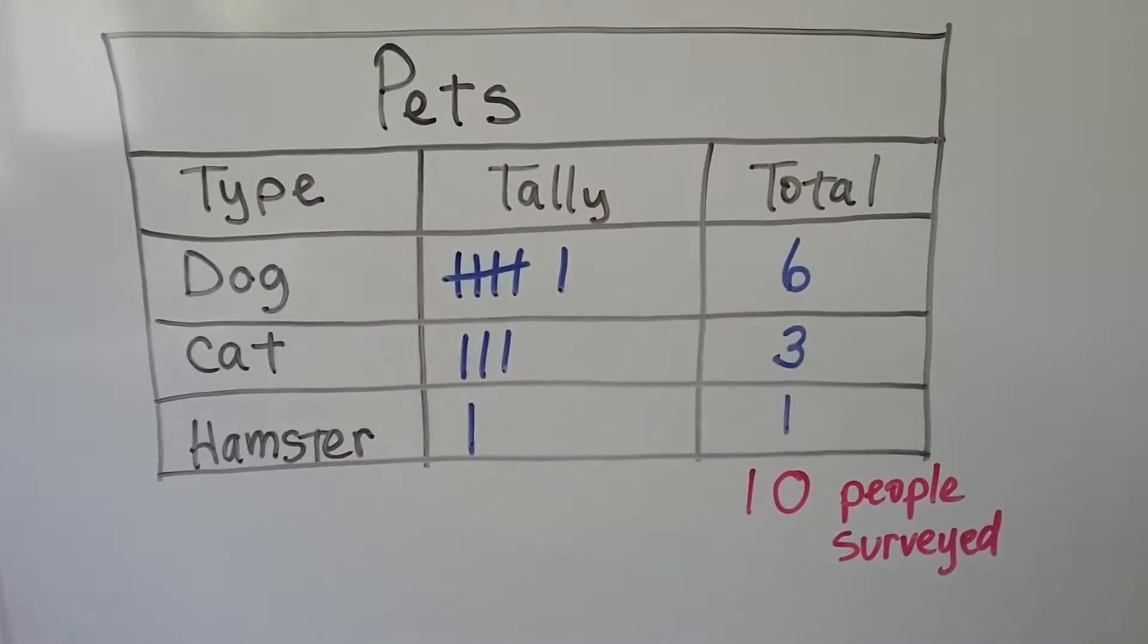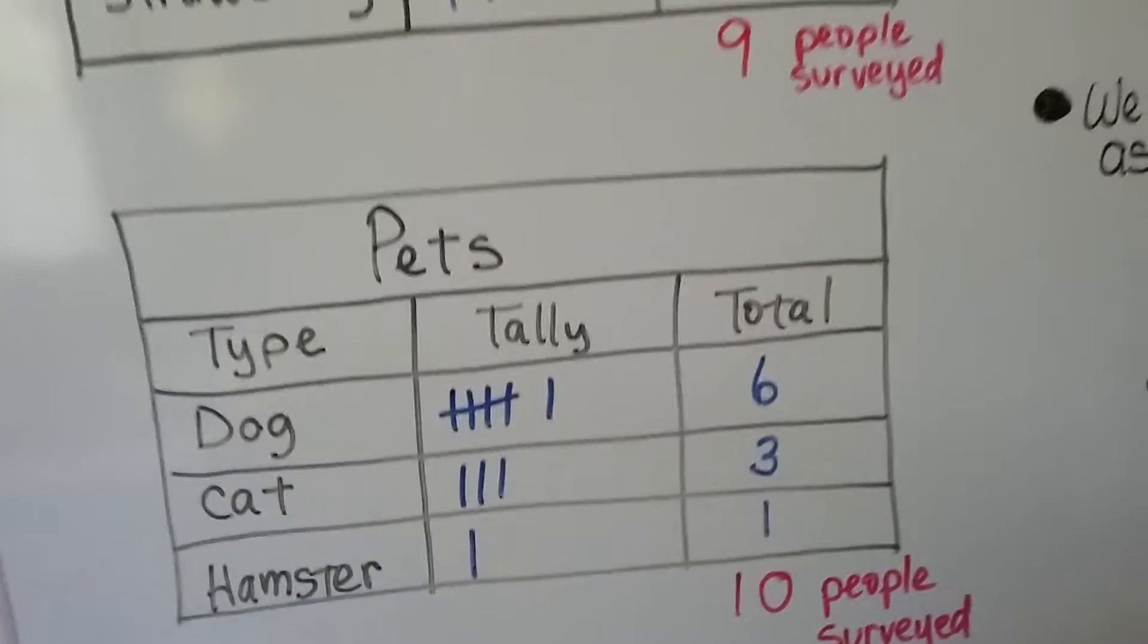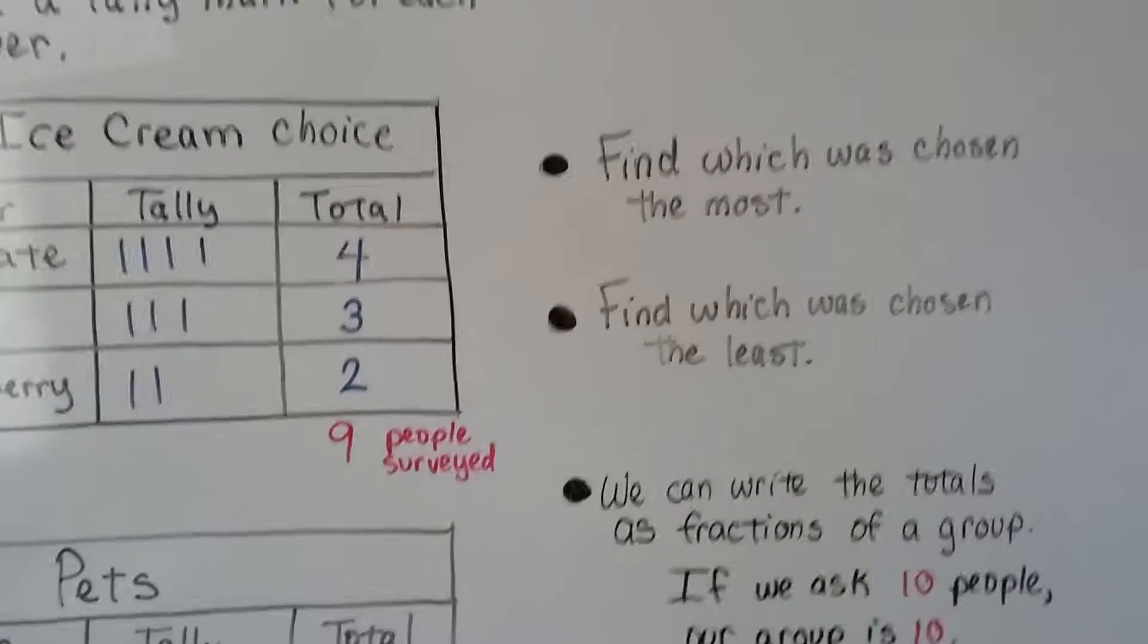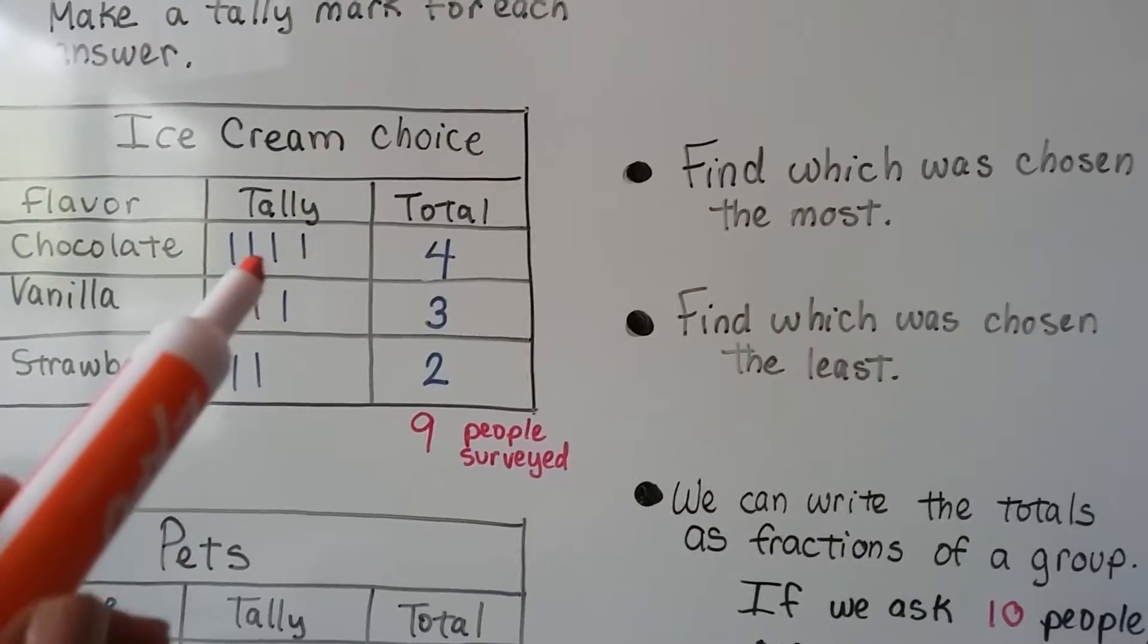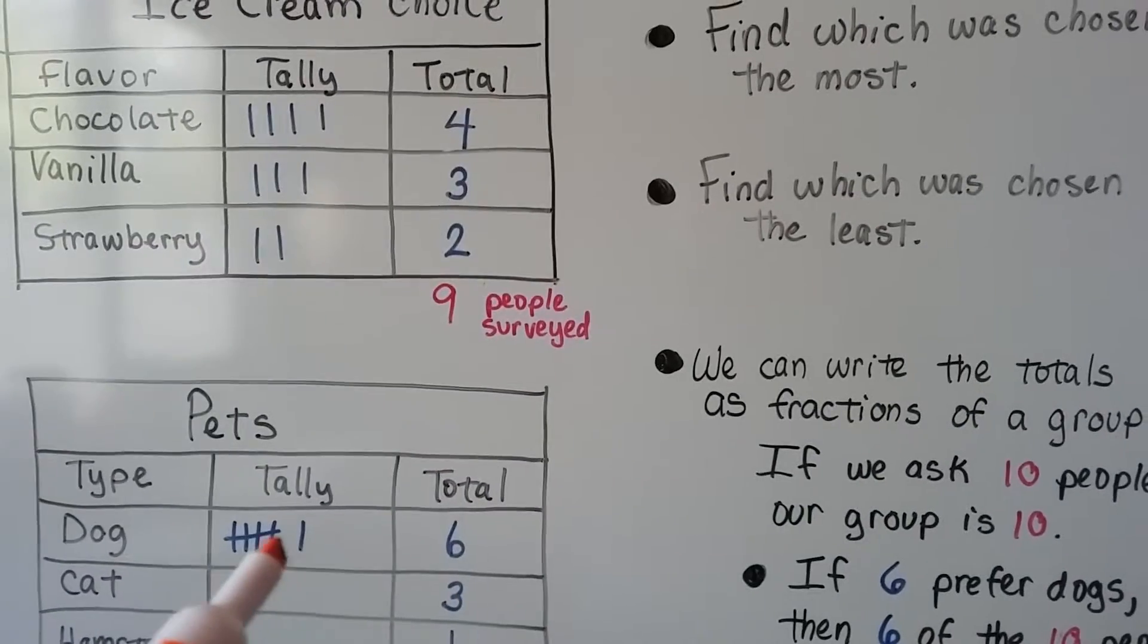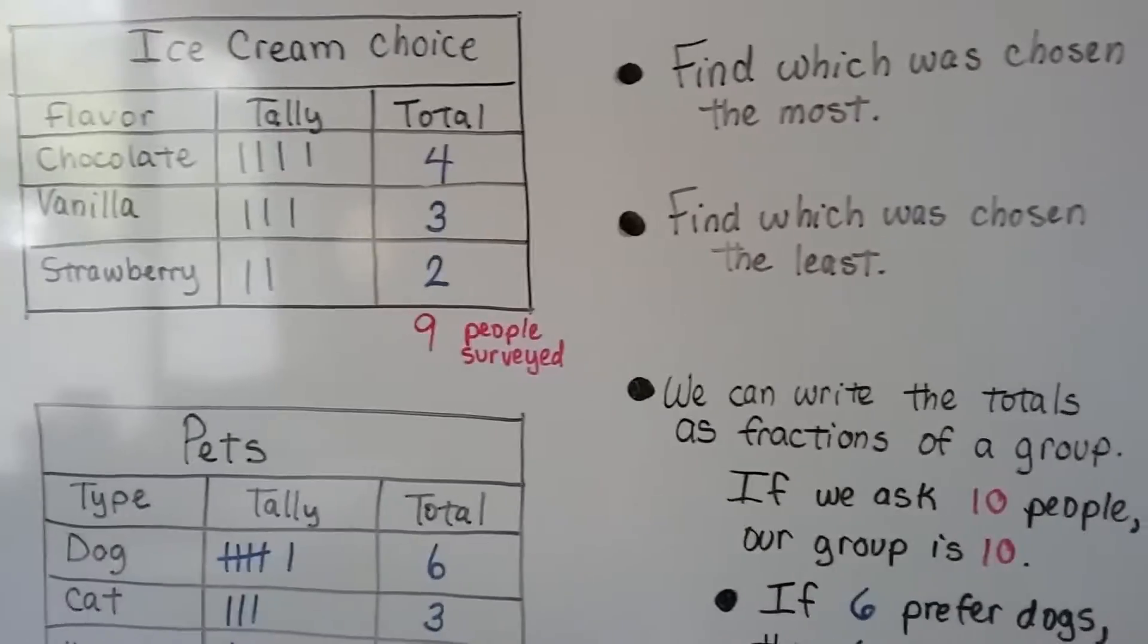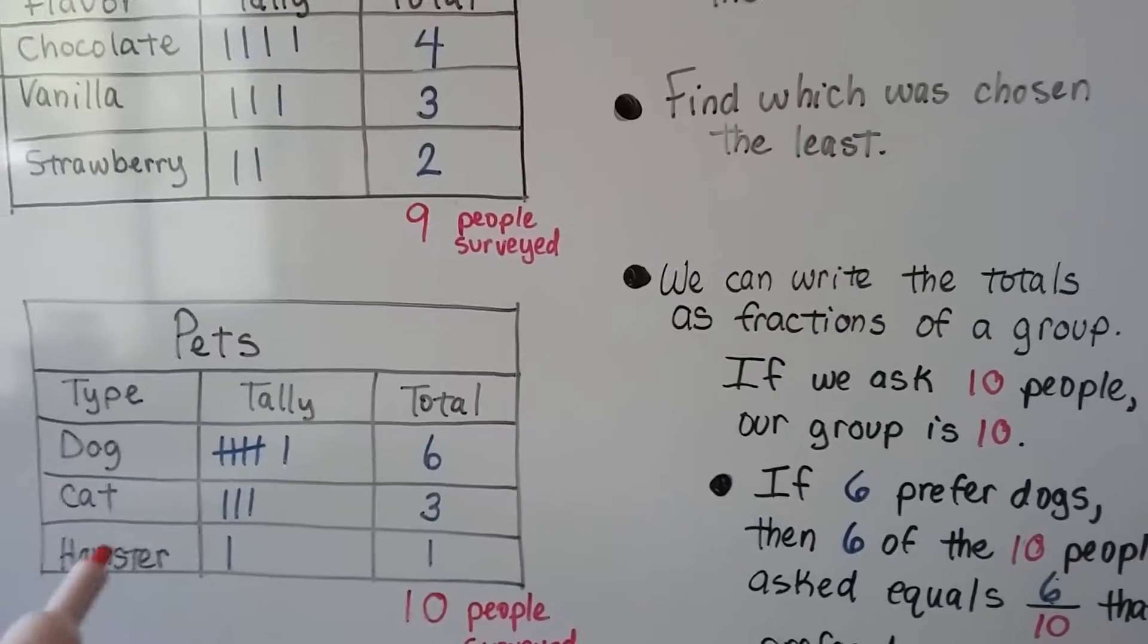You can just look at the chart and see which is the favorite pet. You find which was chosen the most. For our pretend ice cream one, it would be chocolate. And for our pretend pet survey, it would be dogs. You find which one was chosen the least. That would be strawberry, or that would be hamster.